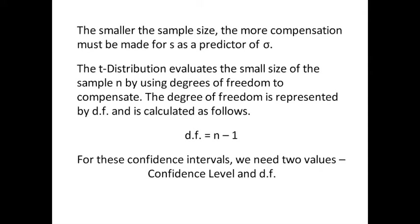The degrees of freedom are represented by the little letters df, and the formula for calculating df is equal to n minus 1. For instance, if you have a sample of size 25, then your degrees of freedom are equal to 25 minus 1, which equals 24. If you have a sample size of 5, your degree of freedom is equal to 4. If you have a sample size of 12, your degree of freedom is equal to 11.